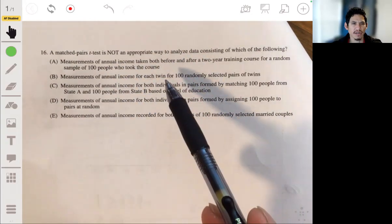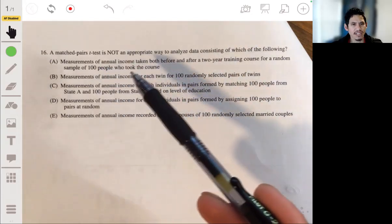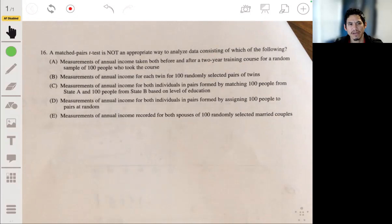Measurements of annual income for each twin for 100 randomly selected pairs of twins. No, again these twins, each pair of twins, they're acting as their own pair. That's fine.